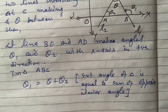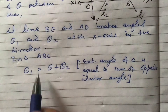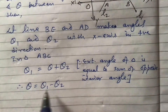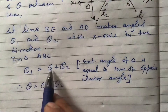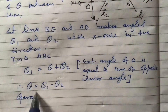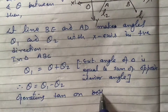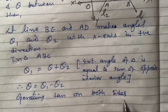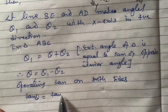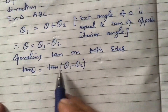Therefore, we can write theta is equal to theta 1 minus theta 2. Now, operating tan on both sides — if you operate tan on both sides, you will get tan(theta) = tan(theta 1 minus theta 2).